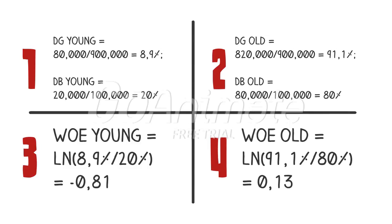This gives you 8.9%. In the same way, we get 20% as the distribution for young people's bad credit. So now, to identify the weight of evidence for young people, we only have to do one more step: take the distribution of good credit, divide it by the distribution of bad credit, and take the natural log. In our case, we have 8.9% divided by 20%, and taking the log gives us a value of minus 0.81.